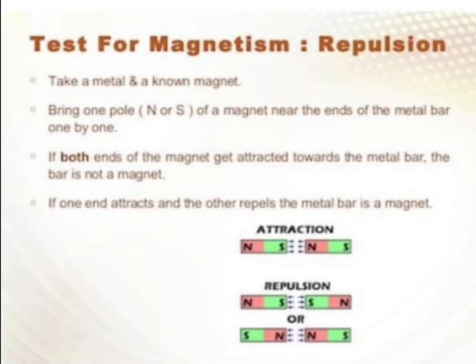Test for magnetism — repulsion। अगर आपने two magnets लिये, तो every magnet has two poles — one is North, one is South। आप check कर सकते हैं: North Pole, North Pole को repel करेगा; South Pole, South Pole को repel करेगा; North Pole, South Pole को attract करेगा। Attraction का मतलब वो एक दूसरे के close आएंगे और stick कर जाएंगे। लेकिन जब उन magnets को opposite कर दोगे, दोनों के same ends आमने-सामने होंगे, तो वो repel करेंगे — आप जितनी भी कोशिश कर लो close करने की, वो एक दूसरे को धक्का मारेंगे और उनके बीच में distance रहेगा।